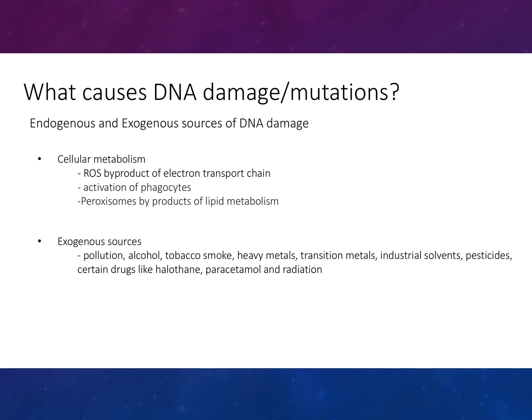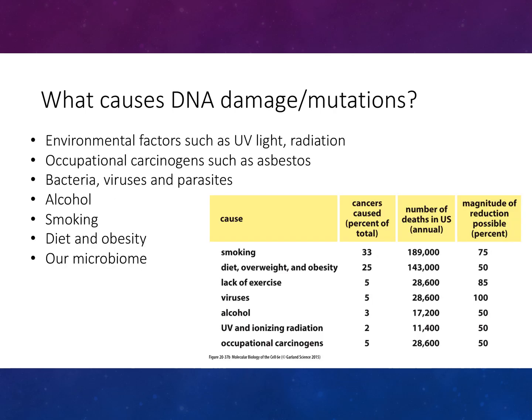Causes of DNA damage mutations include cellular metabolism, reactive oxygen species, by-products of the electron transport chain, inflammation from phagocytes and peroxisomes, by-products of lipid metabolism, and exogenous sources such as pollution, alcohol, tobacco smoke, heavy metals, transition metals, industrial solvents, pesticides, certain drugs like paracetamol, and radiation.